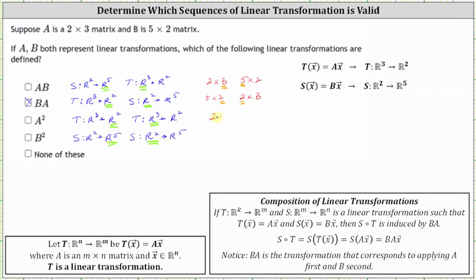For A squared, we have a two by three matrix times a two by three matrix, which is undefined — the number of columns in the first matrix does not equal the number of rows in the second. Because the multiplication is undefined, so is the corresponding composition of linear transformations. For B squared, we have a five by two times a five by two, and again the number of columns does not equal the number of rows, so the multiplication and the corresponding composition are undefined.